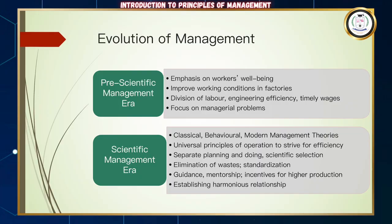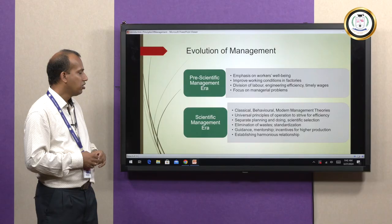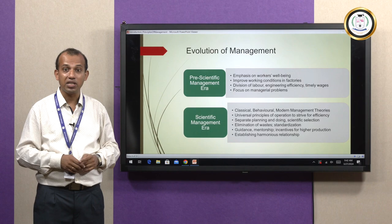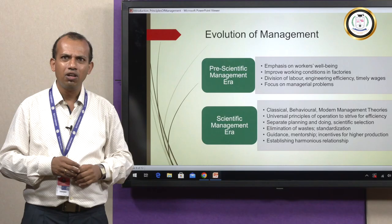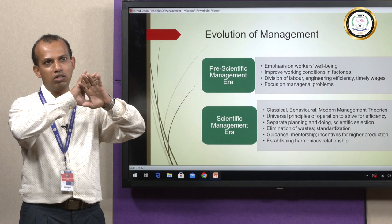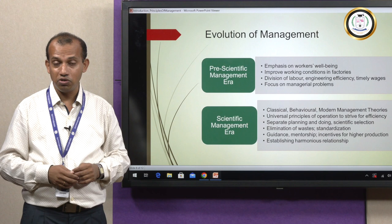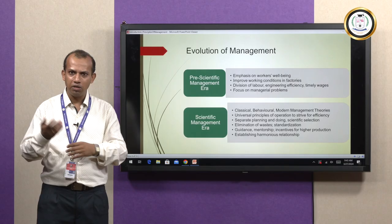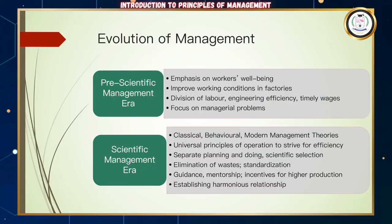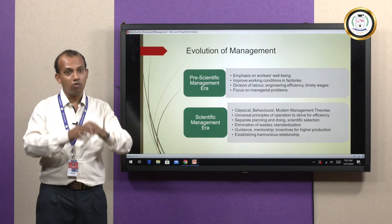What is the evolution of management? Broadly, there are two categories: pre-scientific and the scientific era. During the pre-scientific era, there was an emphasis on workers' well-being — improving working conditions in factories, reducing working hours, paying workers sufficiently based on productivity, providing meals, division of labor, and measuring efficiency from both a people's perspective and an operations or process perspective.